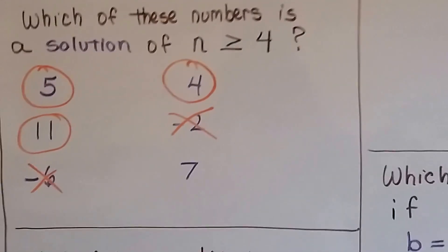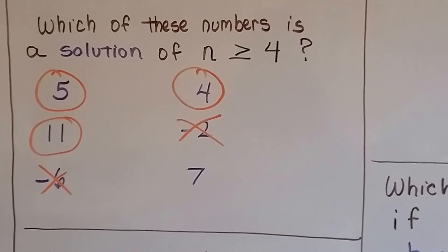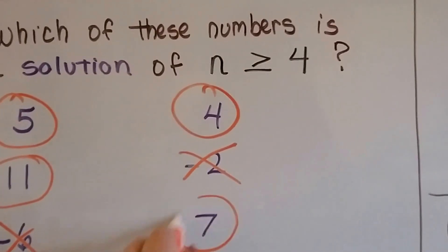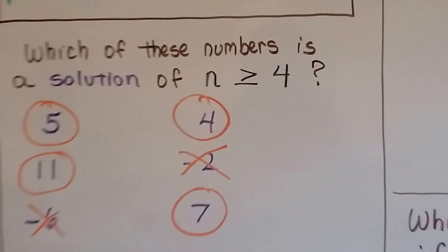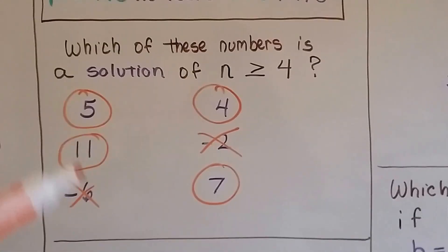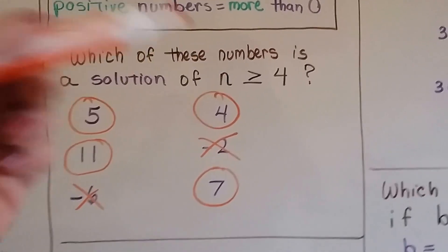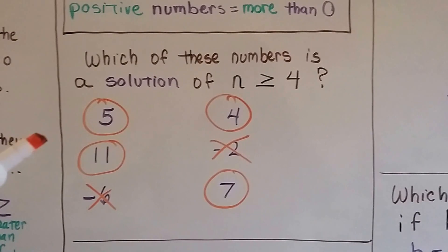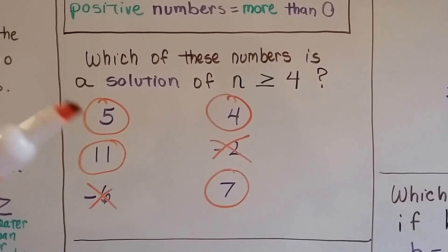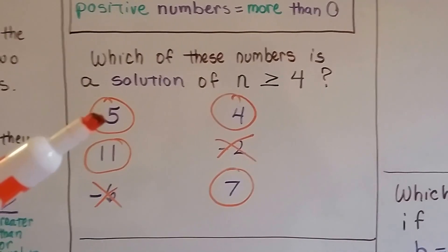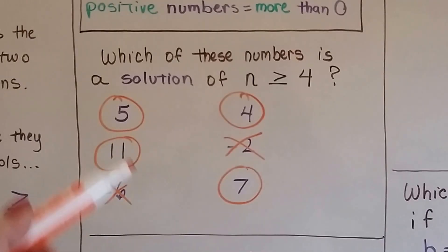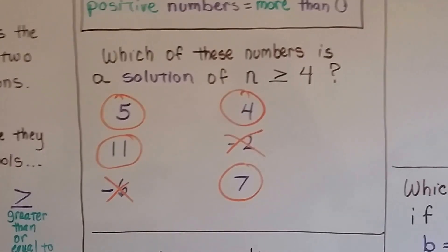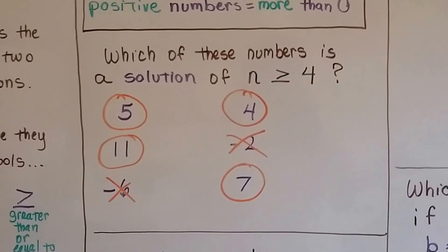How about 7? Is 7 greater than or equal to 4? 7 is bigger than 4, so that would be a solution. We've got 4 solutions for this, and we can think of many more — because 6, 8, 9, 10, 12 are numbers not listed here, and they're all greater than 4. We could keep going on to infinity.